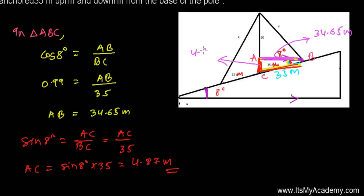Now we need another construction — dropping this pole and extending this line to form a right-angle triangle. If you look closely, these two lines are again parallel, so the corresponding angle will be equal. This angle is also 8 degrees, and here is 90 degrees. So we have 8 degrees here and 8 degrees here.